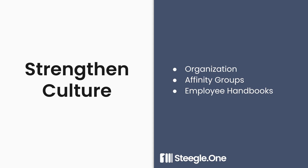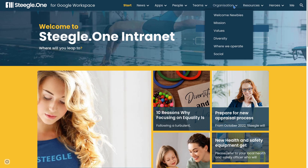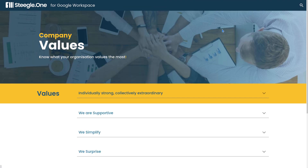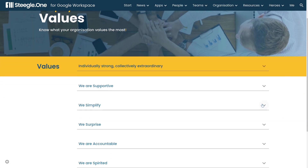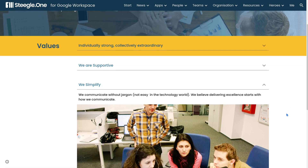Stiegel One Intranet allows you to strengthen culture in various ways. You can show off your organisation's missions and values, help employees onboard with employee handbooks, and allow people with like-mindedness to connect in affinity groups. The organisation pages let you display your company's missions, values, and diversity, with a wealth of information that can be expanded to discover the organisation's culture.